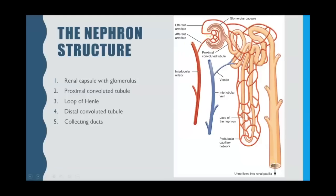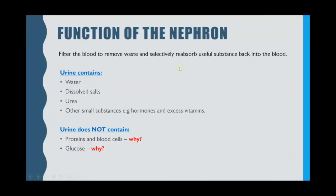The overall function of the nephron is to create urine by filtering the blood to remove waste. Any excess water and urea are going to be removed. Useful substances will be selectively reabsorbed back into the blood. So the urine will only contain excess water, dissolved salts or mineral ions, urea, and any other small substances that can be filtered out — such as hormones or excess vitamins.